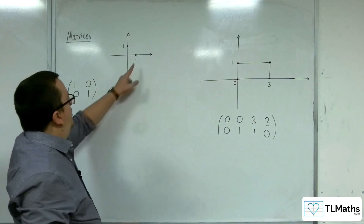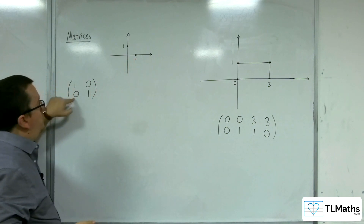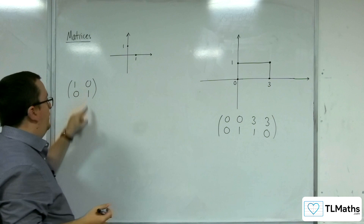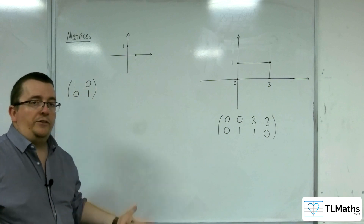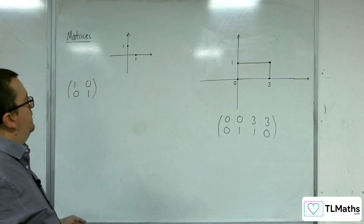So the point (1, 0) goes to (1, 0), and the point (0, 1) goes to (0, 1), and so they remain fixed.